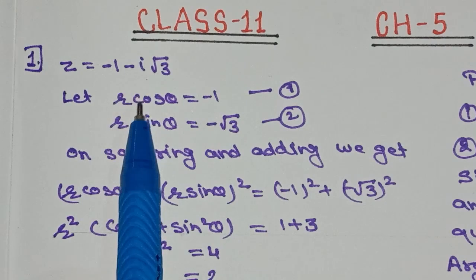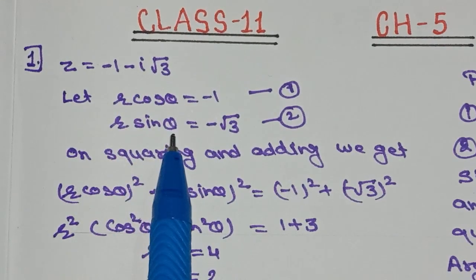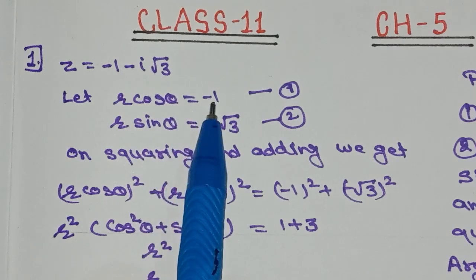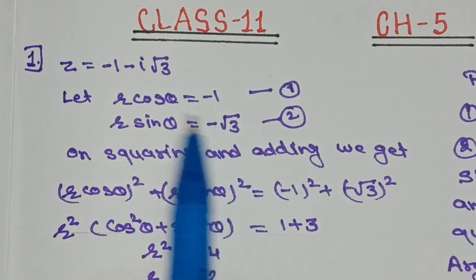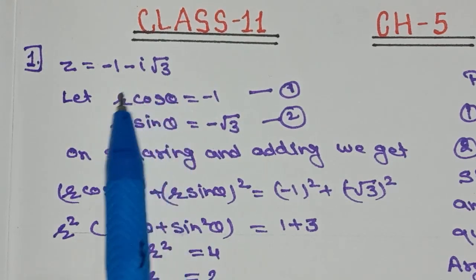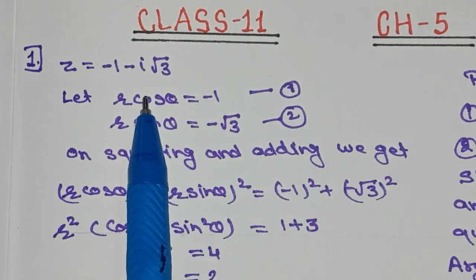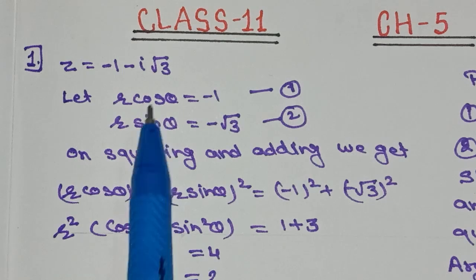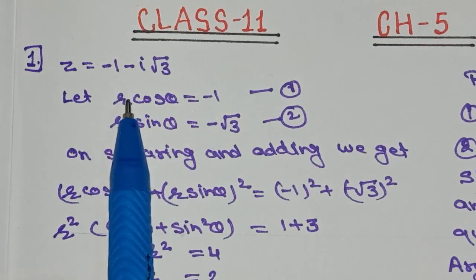Real part is put equal to r cos θ, imaginary part is put equal to r sin θ. After that, we square the first equation, square the second equation, and then add both equations. So on squaring and adding: (r cos θ)² + (r sin θ)² = (−1)² + (−√3)².